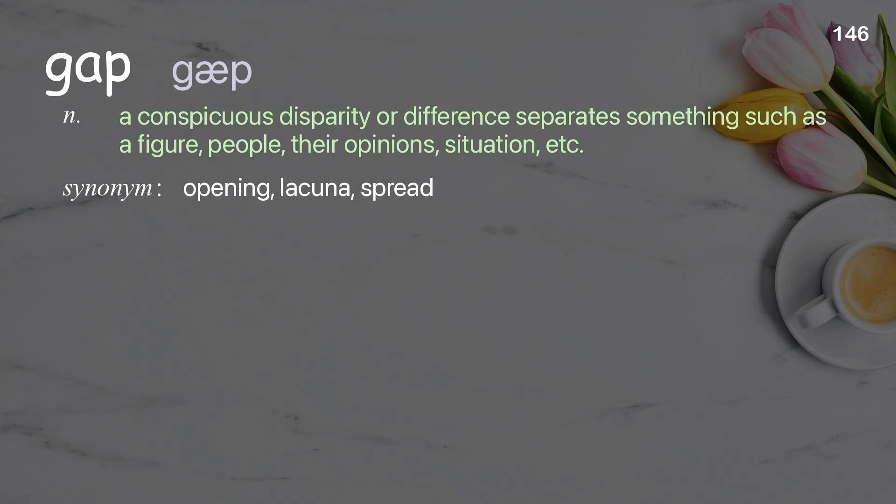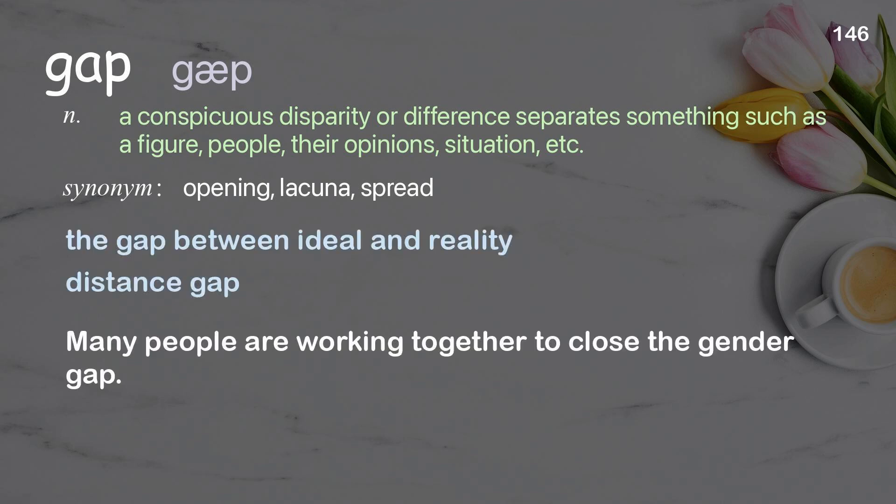Gap: a conspicuous disparity or difference that separates something such as a figure, people, their opinions, situation, etc. Examples: the gap between ideal and reality, distance gap. Many people are working together to close the gender gap.